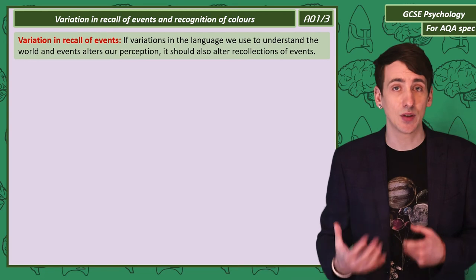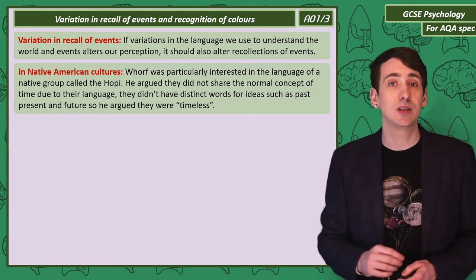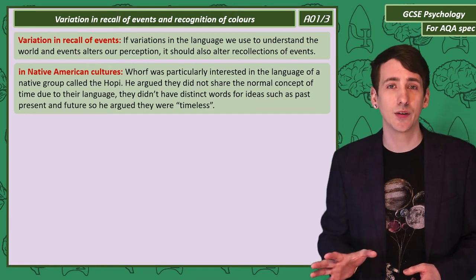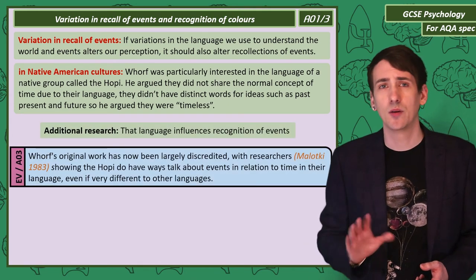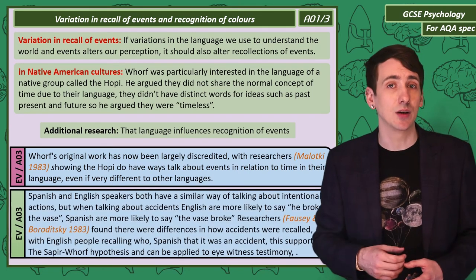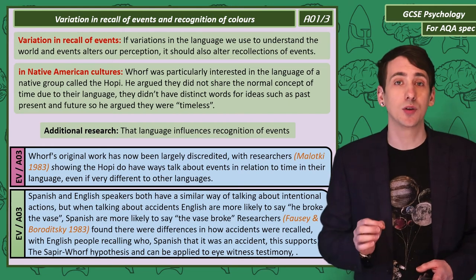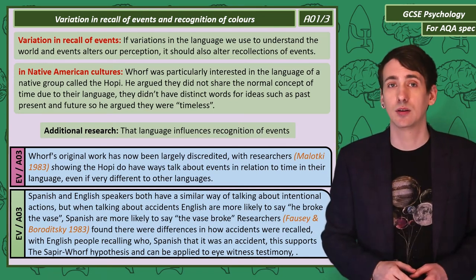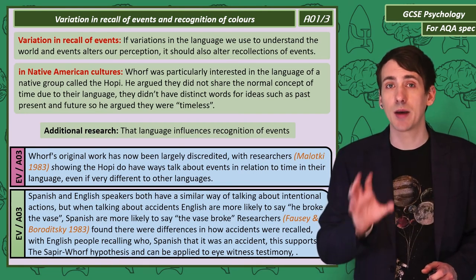If different words in our language change our perception, then it should change how we interpret events. Whorf studied the language of a Native American group called the Hopi. The Hopi language didn't seem to have the normal concept of time — no words for past, present and future — and Whorf suggested the Hopi people experienced time as timeless. This original work has been heavily criticised, with later work showing the Hopi do have ways to talk about events being related to time. However, research between Spanish and English speakers found very different ways of speaking about accidents. English speakers say 'he broke the vase,' while Spanish speakers say 'the vase broke.' In recall, English speakers were more likely to remember who broke the vase but not that it was an accident, while Spanish speakers recalled it being an accident but not who broke it — suggesting perception of the same incident changed depending on the language used.